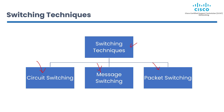Switching is critical to network communication because it determines how data packets are transmitted and received. The efficiency of the switch determines the speed at which data can be transmitted and the reliability of the network. In addition, the type of switching used determines the level of security, quality of service, and other features of the network.